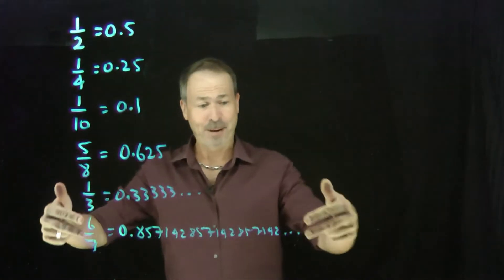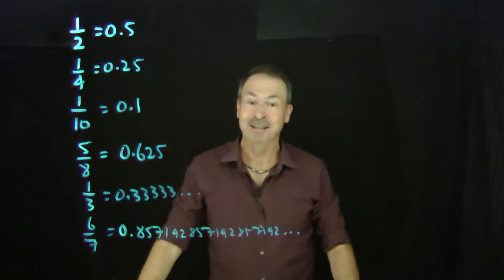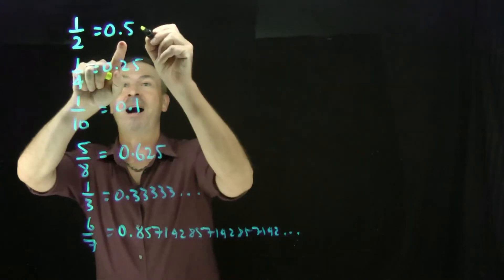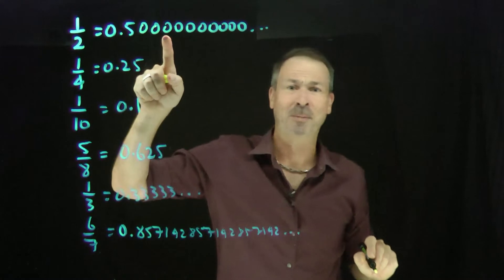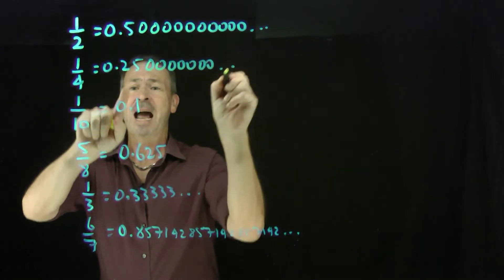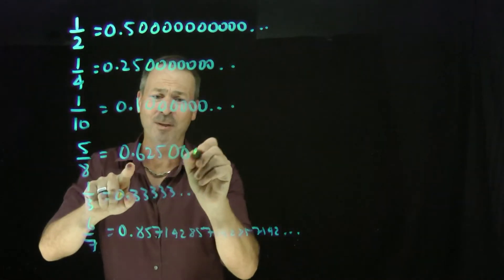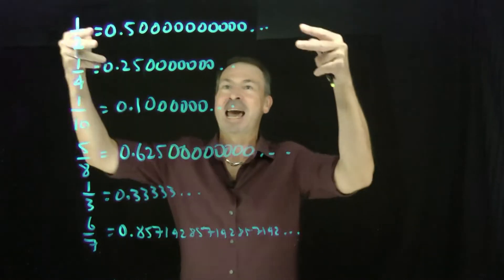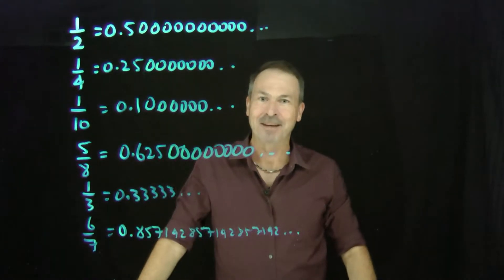So these fractions have a repeating pattern that goes on forever. But you can actually argue that the other representations also have a repeating pattern that goes on forever — people just don't bother writing it. I could think of 0.5 as 0.5 followed by 0, 0, 0, 0 — a repeating pattern of zeros. 0.25 is really 0.25 with a repeating pattern of zeros, and 0.1 is 0.1 with a repeating pattern of zeros. So every fraction we've written down so far has a representation that falls into a repeating pattern of some kind.